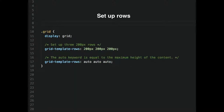You can do the same thing for rows with grid-template-rows. If you want three rows, you do 200 pixels three times. By default it's auto — auto just resizes based on the content.